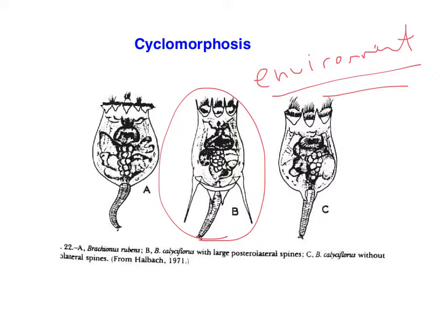There are probably chemical cues in the water. When rotifers are cultured with water containing chemical cues from predators, it's the next generation of individuals that will produce these spines. You can't expose an existing rotifer to a predator and have it grow spines — it can't do that — but it will produce offspring that have spines.